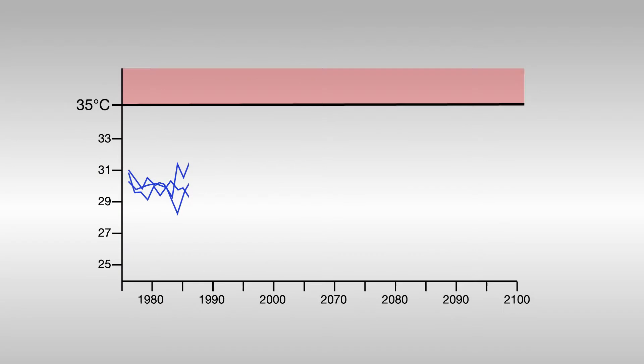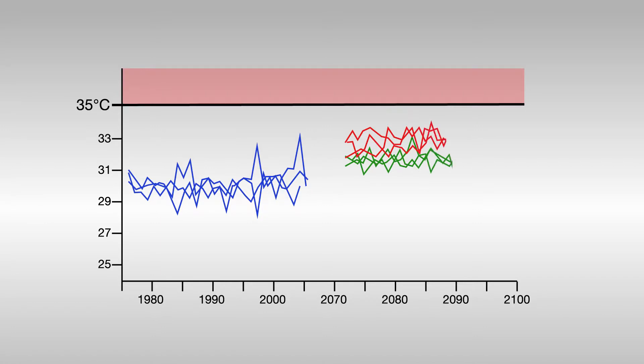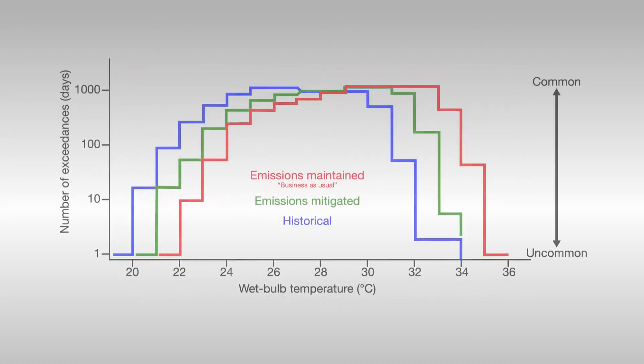The scientists stress that even under the business-as-usual emissions scenario, wet bulb temperatures are not projected to top 35 degrees Celsius more than once every decade or every few decades by the end of the century. But under this scenario, the uncommonly high wet bulb temperatures that today occur in the Gulf about once every 20 days will characterize the normal summer day of tomorrow.